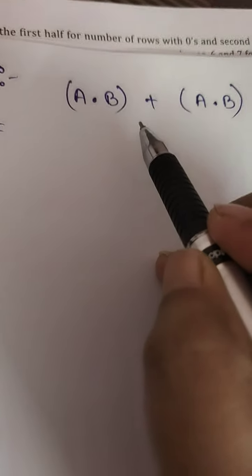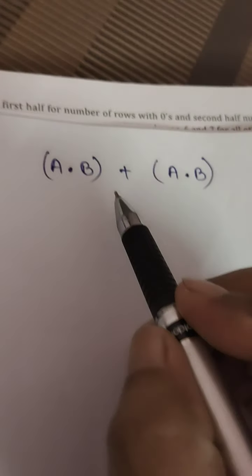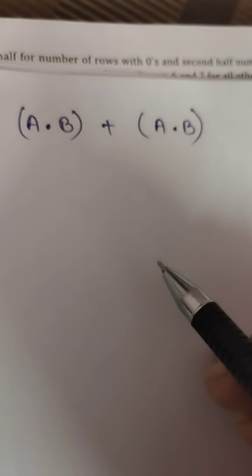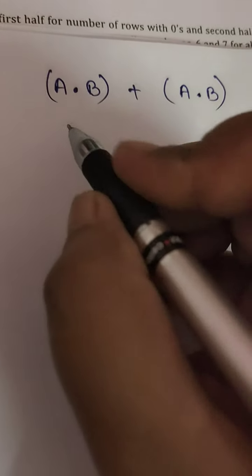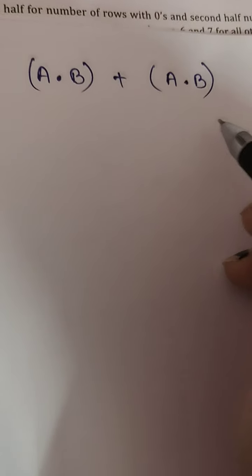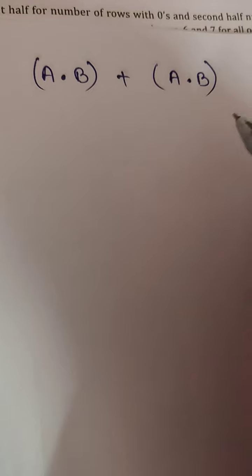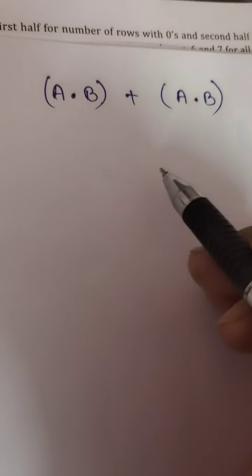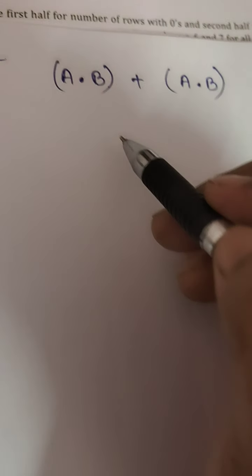Hello everyone, in this video I'll solve this question using a truth table. You need to find out the final output, how it will be. Using a truth table, you need to find out the output. How will we do it? How many variables are there? You see only 2, correct?